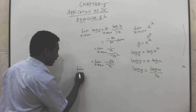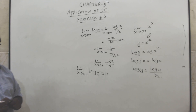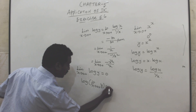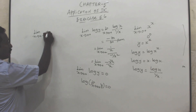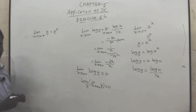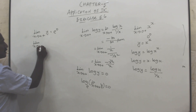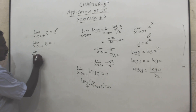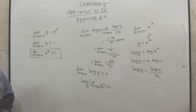So limit x tends to 0 plus of log y = 0. Apply the composite function theorem: log of [limit x tends to 0 plus of y] = 0, which gives limit x tends to 0 plus of y = e^0 = 1. Since y = x power x, limit x tends to 0 plus of x power x equals 1. Is it clear?